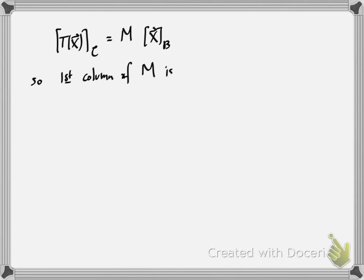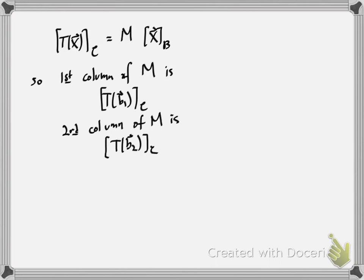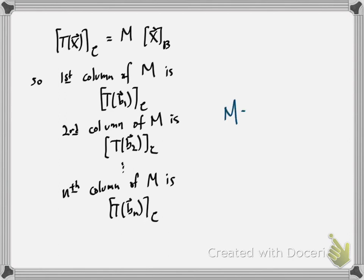The first column of M has to be the linear transformation applied to the first basis vector of B, and then you take the C coordinates — so T of B1, then C coordinates. Similarly, the second column is T of B2, and then you take the C coordinate vector for that. You do that for each column of M, so the nth column is T applied to the nth basis vector of B, and you take C coordinates.